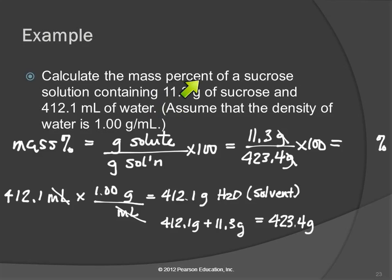These numbers that we started with, 11.3 has 3 sig figs. This volume of water has 4. 3 is smaller, so we'll report this to 3. It's 2.67%.